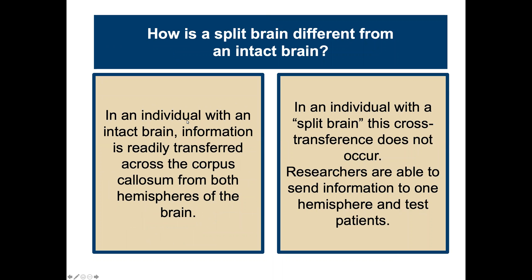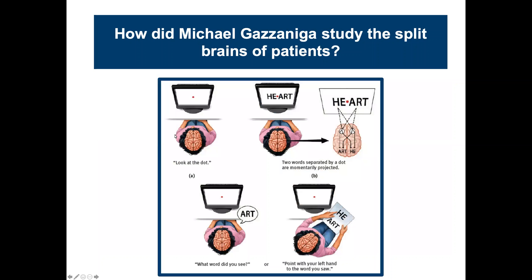How is a split brain different from an intact brain? In an individual with an intact brain, information is readily transferred across the corpus callosum, going from one hemisphere to the other. In an individual with a split brain — someone who has had their corpus callosum severed — this cross-transference does not occur. Researchers are able to send information to one hemisphere and test the patients, which is exactly what some researchers did.